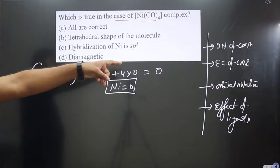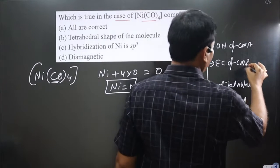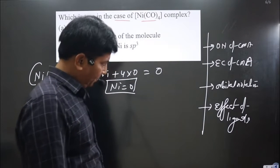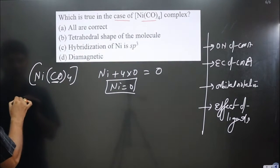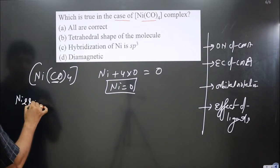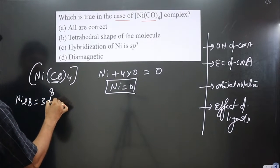Next we write electronic configuration of the central metal atom. Nickel atomic number is 28, so the outermost electronic configuration will be 3d⁸ 4s².